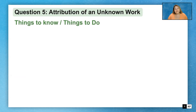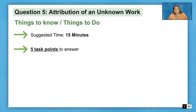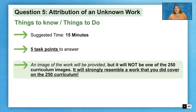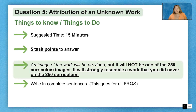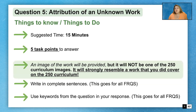Question number five on your AP Art History Exam is Attribution of an Unknown Work. The suggested time is 15 minutes, like all the short FRQs, and it's worth five task points. You will be given an image that is not one of the 250 curriculum images, but it will strongly resemble one of the works on the curriculum — that's the point of this question. Write in complete sentences and use keywords from the question in your response.